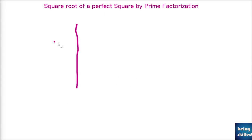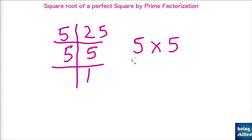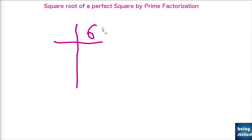Let's try the number 25. Divide by 5 to get 5, then divide again by 5 to get 1. We got two factors: 5 and 5. Since they form a pair, √25 = 5. So 5 is the square root of the perfect square 25.